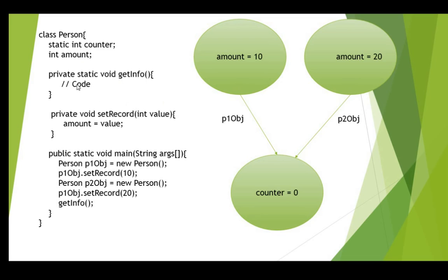Here we have a static method getInfo where you can write any code, and another method setRecord which stores the value for amount. When the 'new' keyword is encountered, a default constructor is invoked. Since I haven't defined any constructor, the default constructor is invoked, an instance of the Person class is created, and its address is stored in the object reference variable.